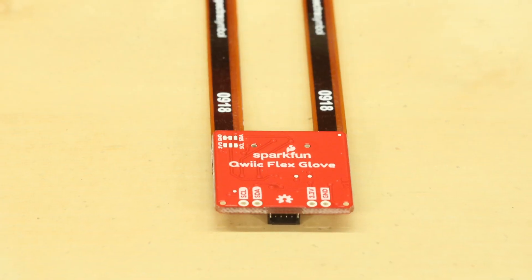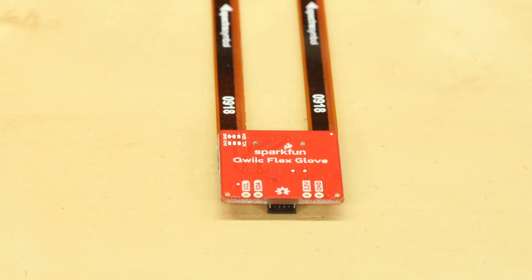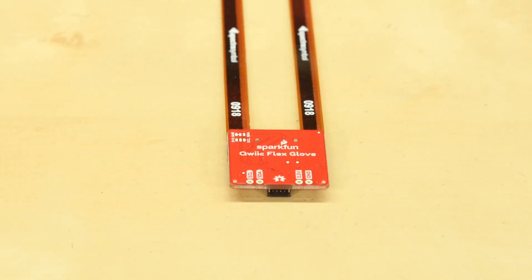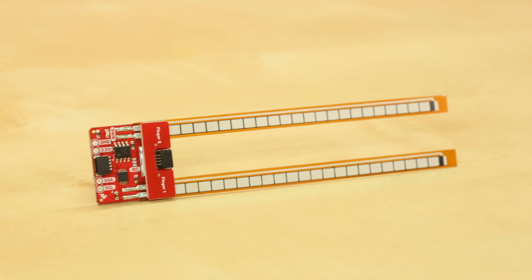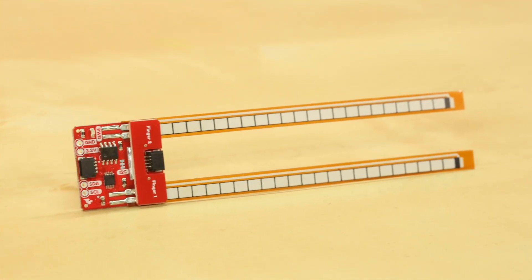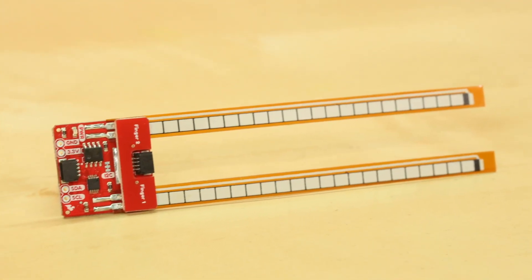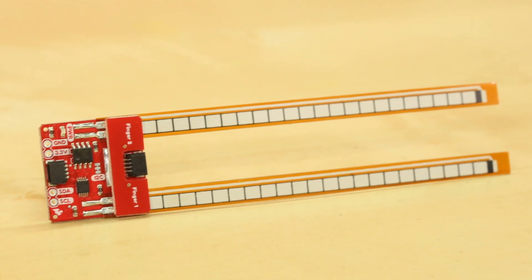It is important to note that the Quick Flex Glove Controller only has two flex sensors on board but they can be daisy chained together. Since you have four different options for I2C addresses with the Quick Flex Glove Controller you can use this board with up to eight fingers.